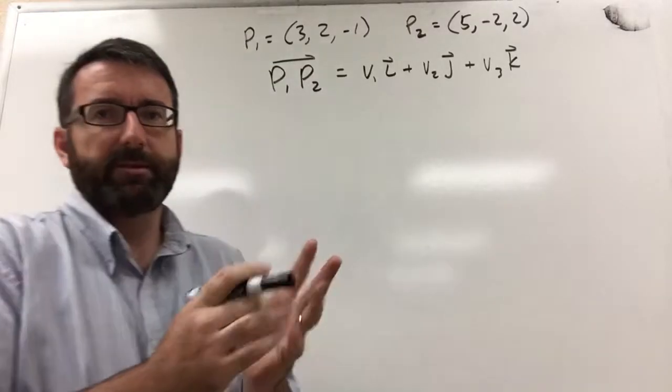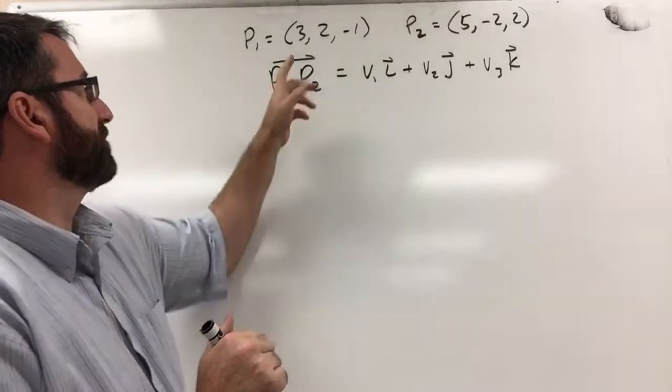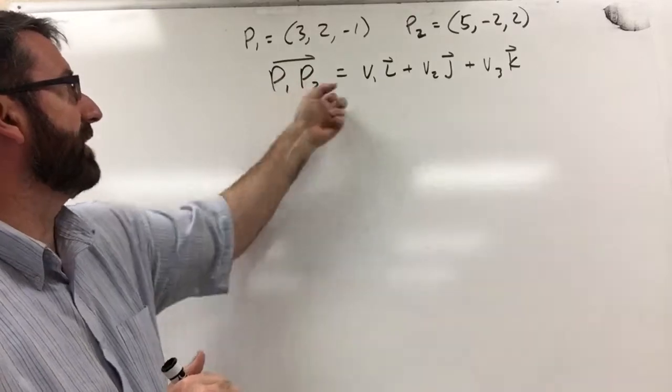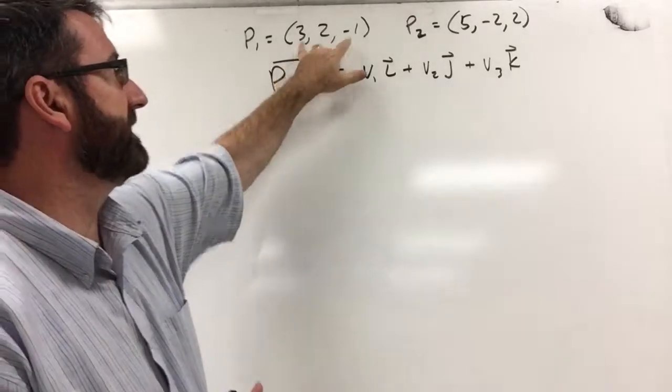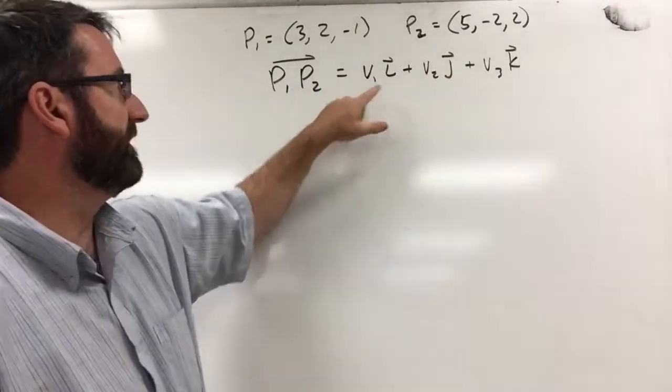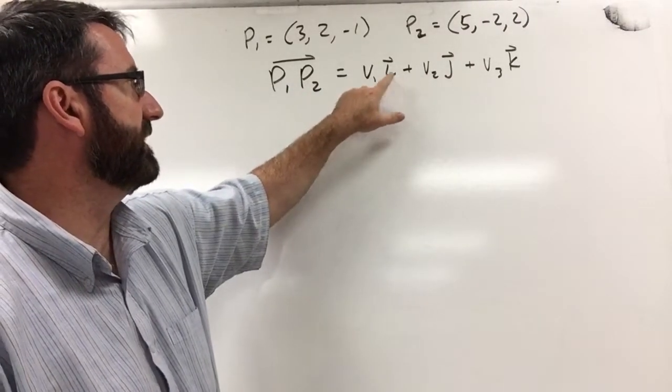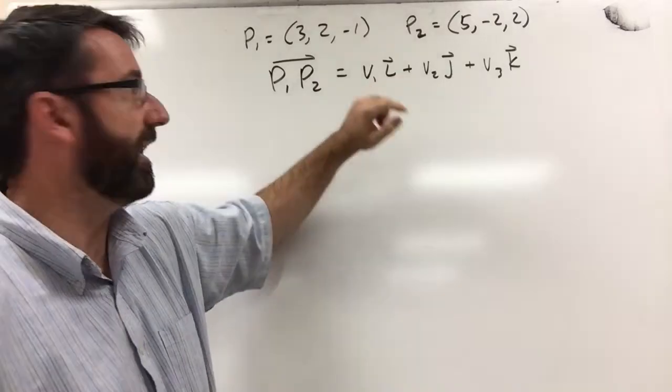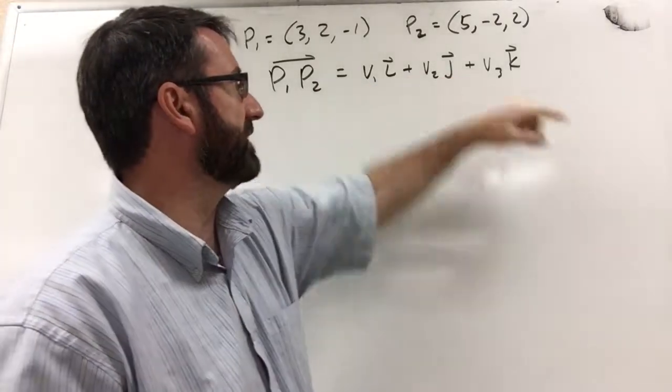All right, next we're asked to express this vector, P1, P2, from this initial point to this terminal point in this form: v1 times the standard unit vector i plus v2j plus v3k.